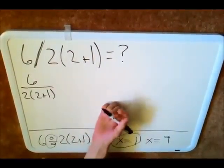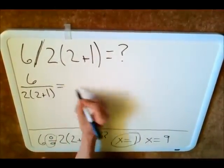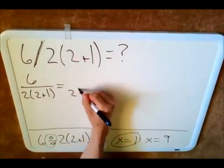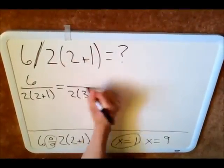Alright, so from here, we can move on. And we will add what's in the parentheses, 2 plus 1. And it will become 2 times 3.